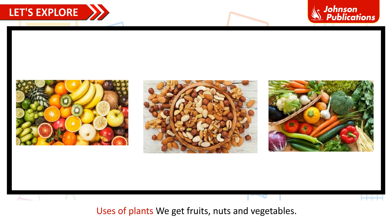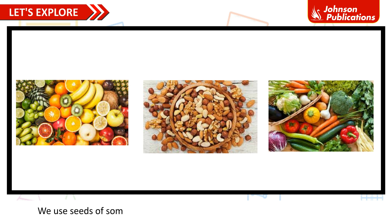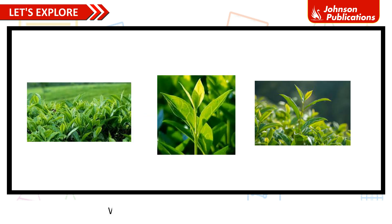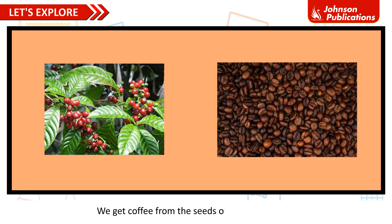Uses of plants. We get fruits, nuts and vegetables. We use seeds of some plants like mustard, coconut and sunflower to make oil. We get spices from plants; these spices add flavor to our food. We get tea from the leaves of the tea plant. We get coffee from the seeds of the coffee plant.